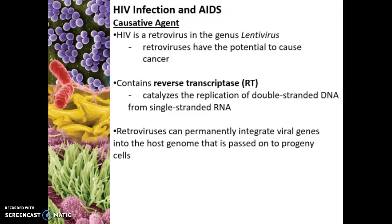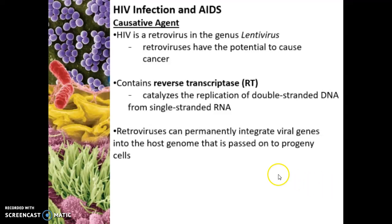With the retrovirus, the virus is an RNA virus — a single-stranded RNA — and that is the genomic nucleic acid material of the virus. The reverse transcriptase actually allows for the replication of double-stranded DNA from the RNA, and so then the host cell is able to make the viral proteins. Another important enzyme is the integrase, which allows the retrovirus to permanently integrate viral genes into the host genome.